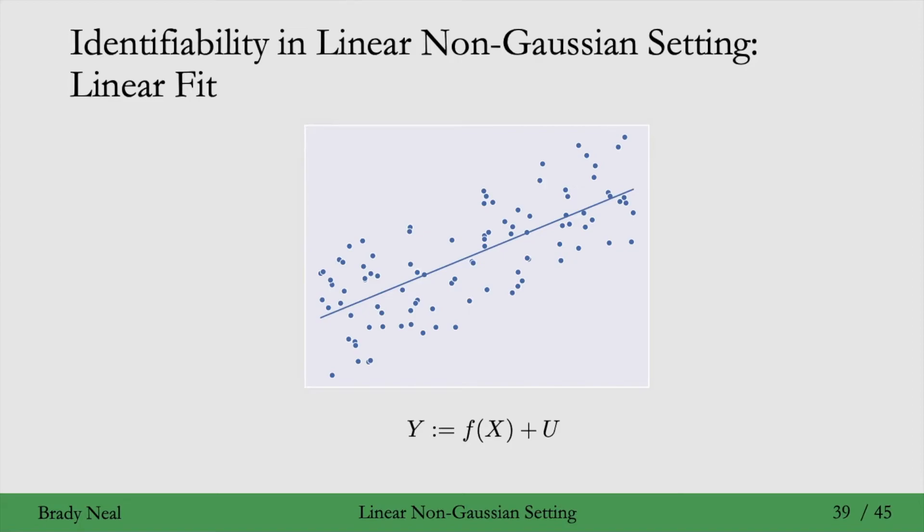But when you do the regression in the anti-causal direction, when the noise term is non-Gaussian, you don't get such a nice line. You actually get something that looks like this. This line doesn't quite look right. It doesn't look like this line where we do the regression in the causal direction.